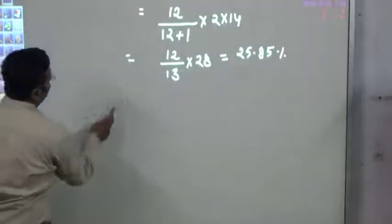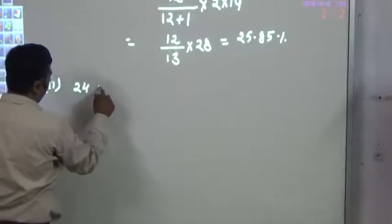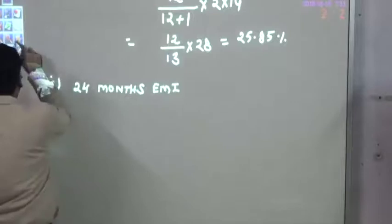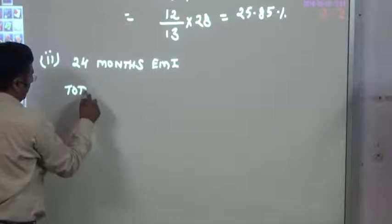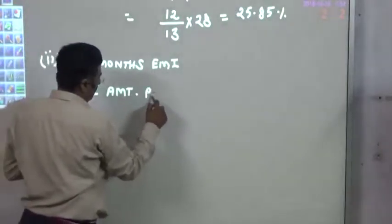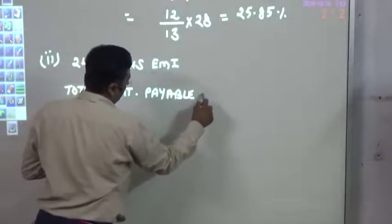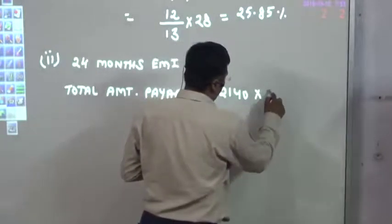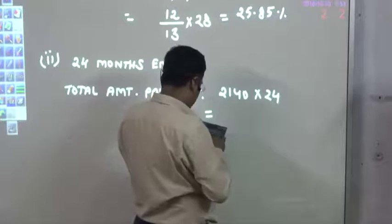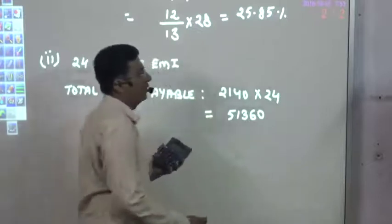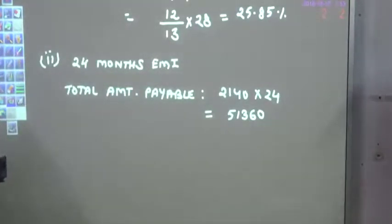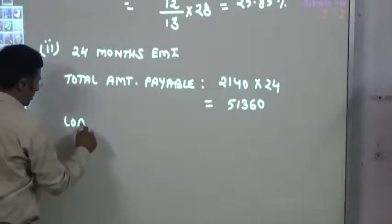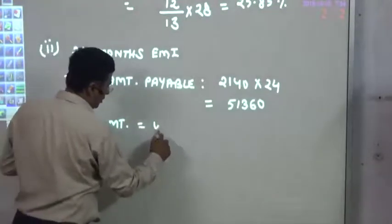For the second option — 24-month EMI — the total amount payable is: 2,140 into 24, which equals 51,360. This is the total amount paid. However, the loan amount was only 40,000.